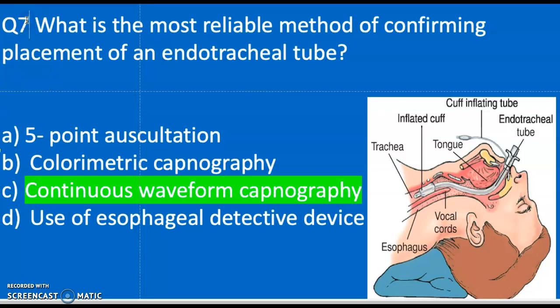Question nine: What is the most reliable method of confirming placement of an endotracheal tube? A) Five-point auscultation, B) Colorimetric capnography, C) Continuous waveform capnography, D) Use of an esophageal detector device. The correct answer is C — continuous waveform capnography.